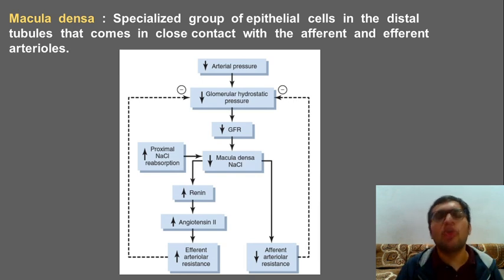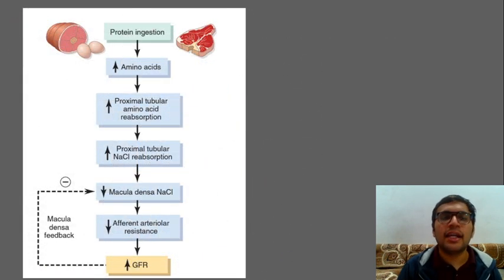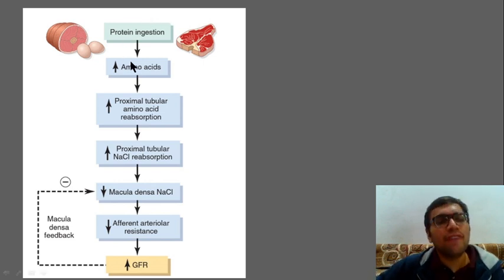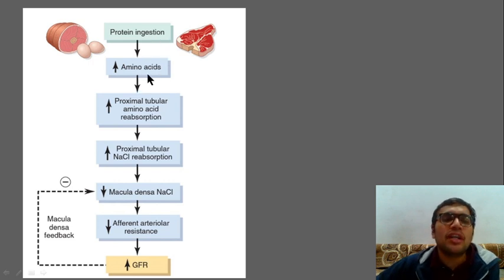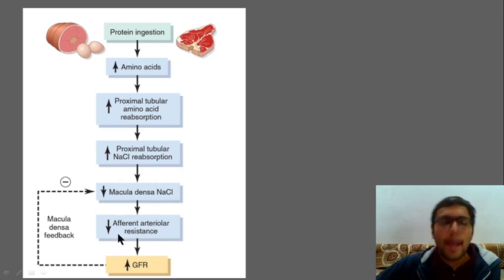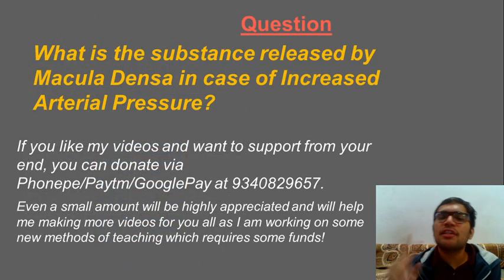The third mechanism, briefly: if protein ingestion is increased, this can also lead to changes in GFR. Increased protein ingestion leads to more amino acids, leading to more proximal tubular amino acid reabsorption. When reabsorption increases, NaCl also increases, and then the same macula densa feedback mechanism kicks in — giving feedback to regulate GFR.